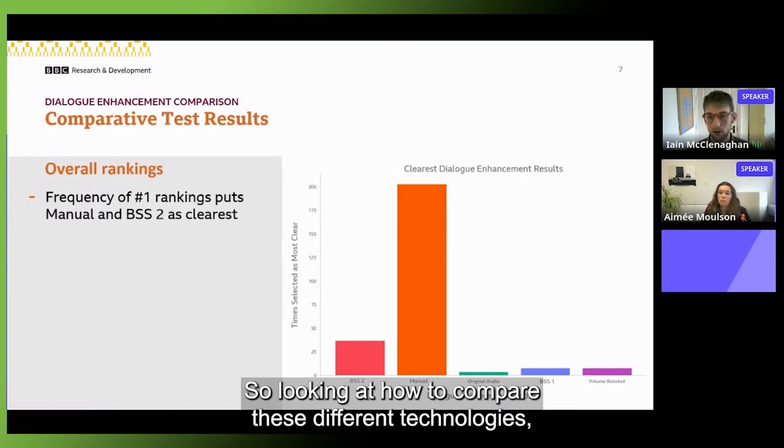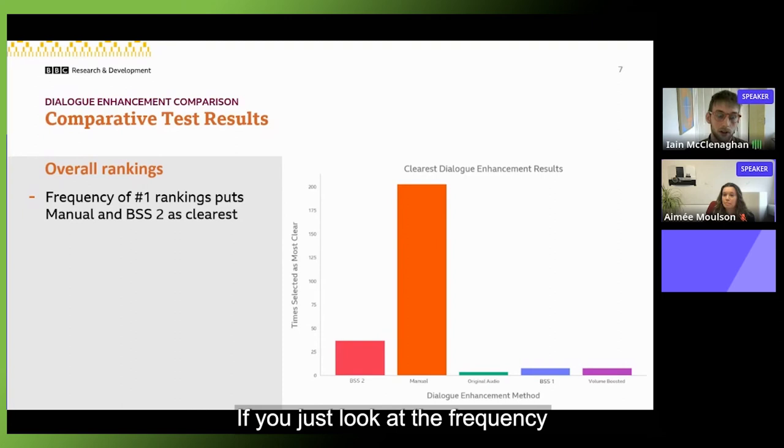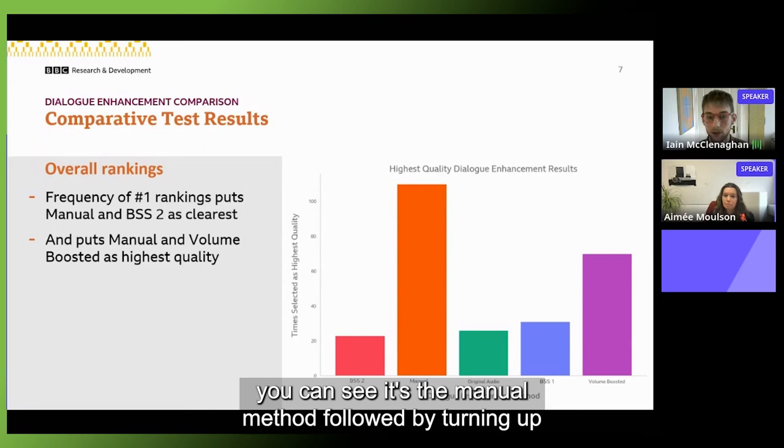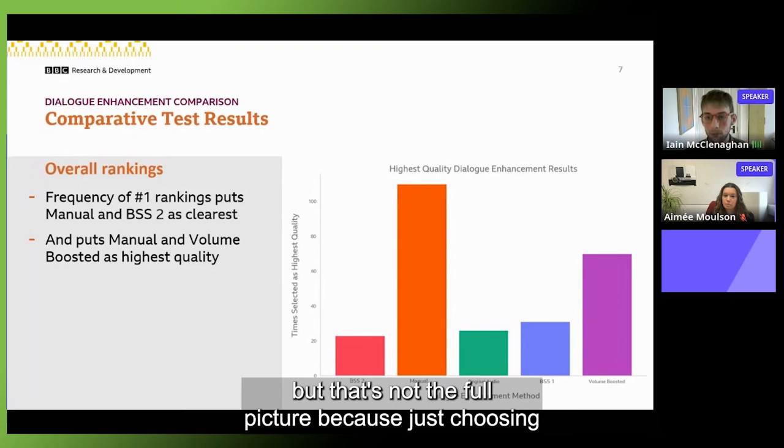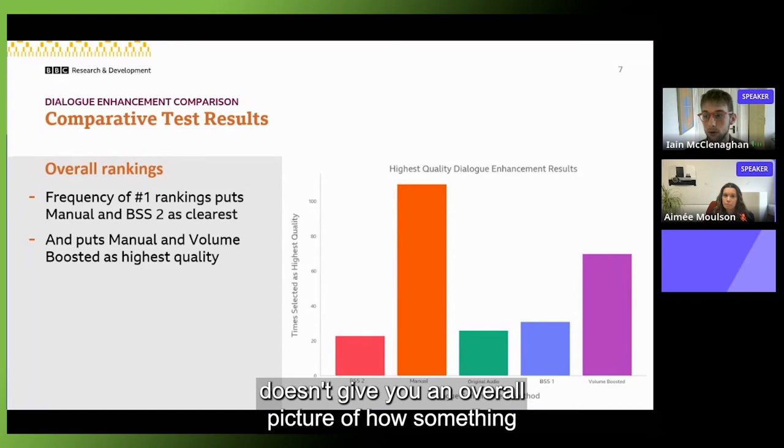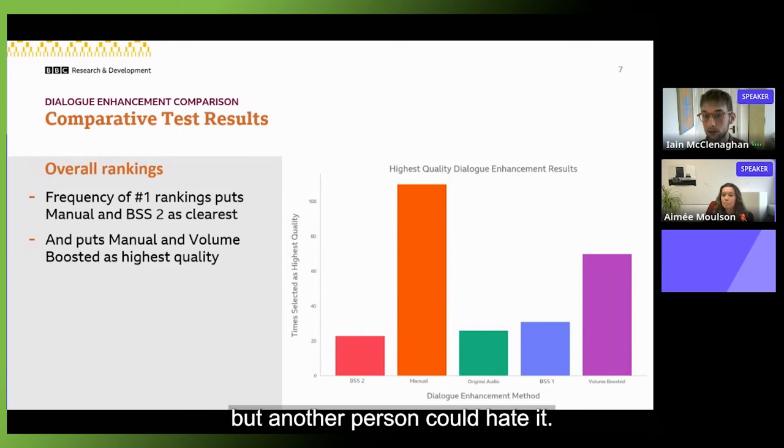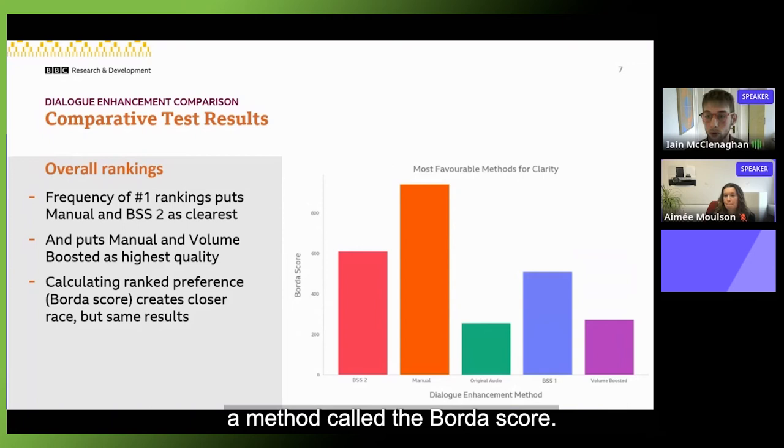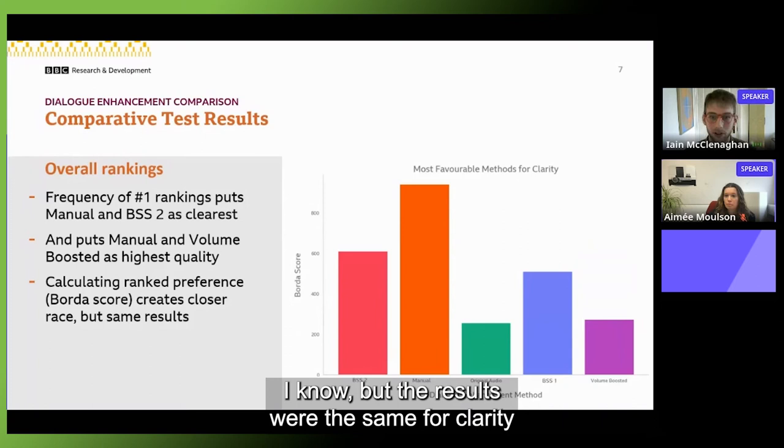So looking at how to compare these different technologies, I went through a variety of methods. If you just look at the frequency with which they were ranked first, you can see a clear result for the manual method followed by the second blind source separation method for clarity, and for quality you can see it's the manual method followed by turning up the volume. But that's not the full picture because just choosing the most frequently rated first things doesn't give you an overall picture of how something performs for everybody. Someone could love it but another person could hate it. So instead I thought about it as if it was an election and tried to pick a most favorable method using a method called the Borda score.